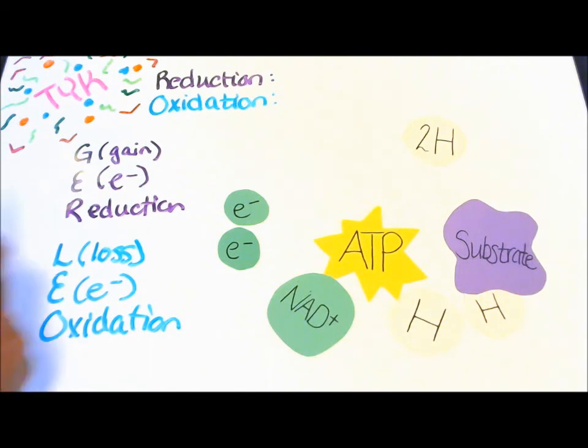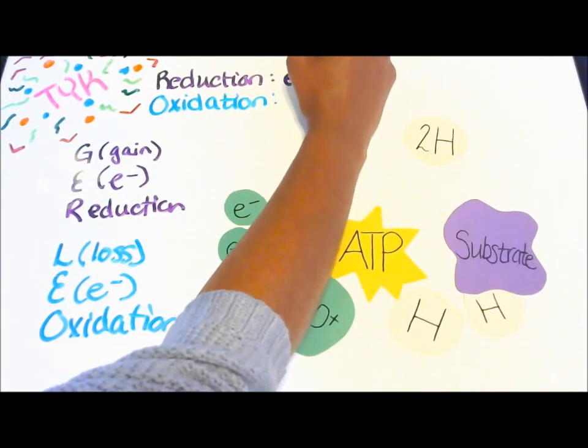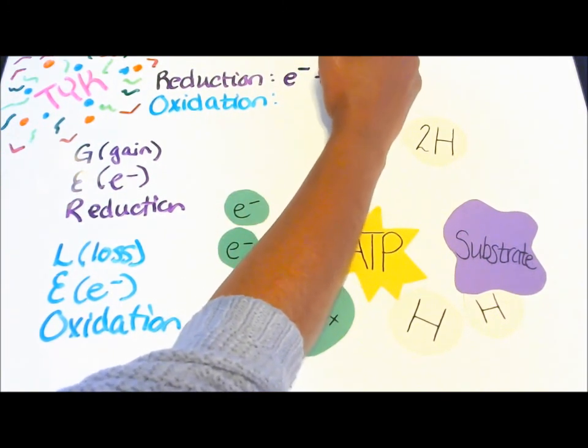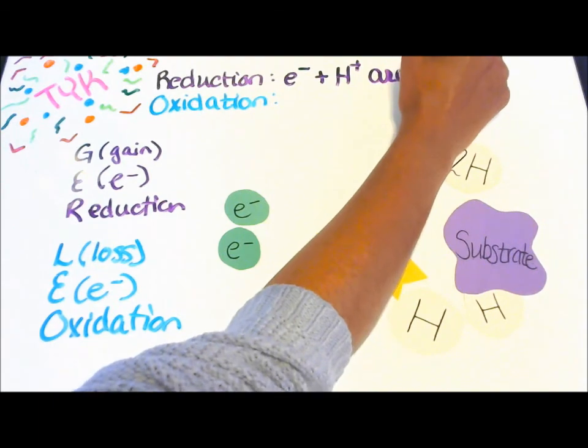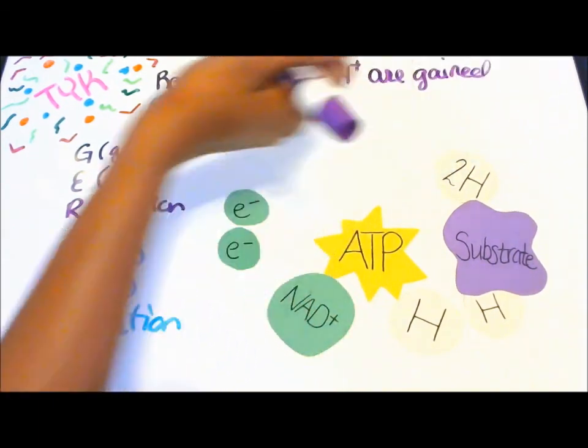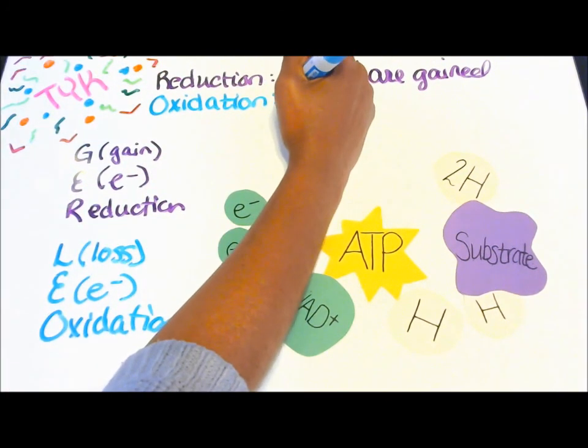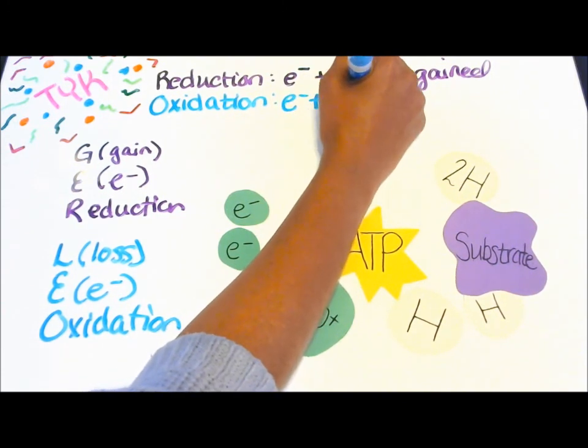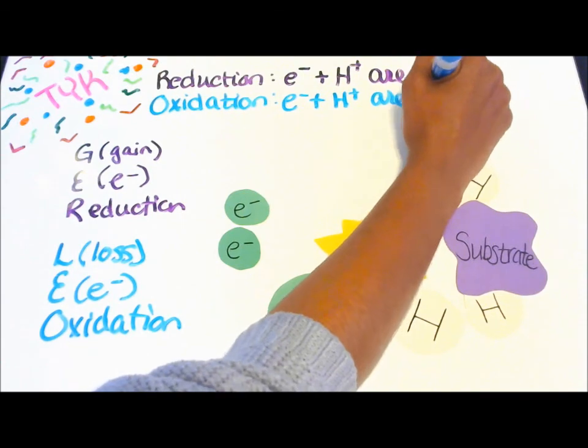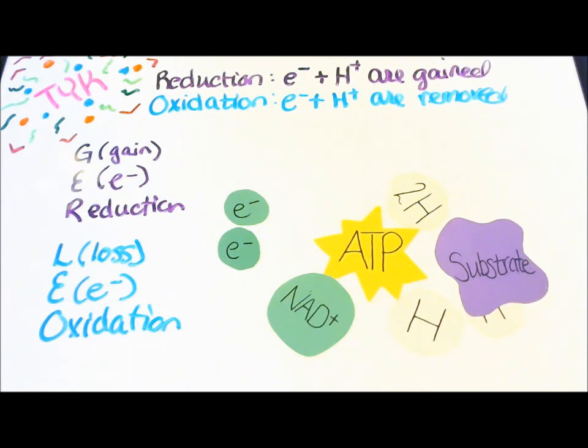So now that we filled it in, we can write our definition up top. The reduction is electrons plus protons that are gained. And here in oxidation, it's the electrons and the protons that are removed. Now we have our definitions.